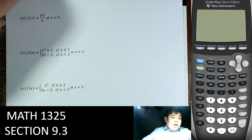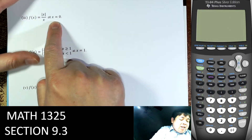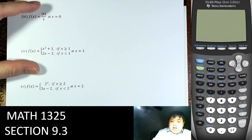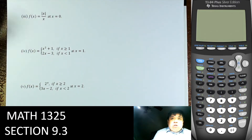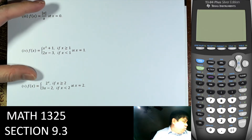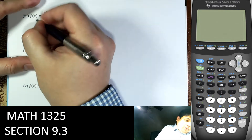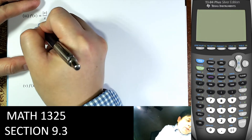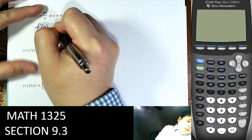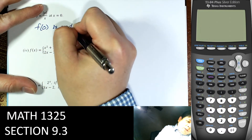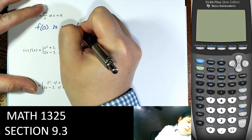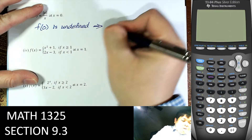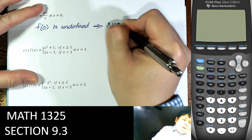Similarly, for the next function at x = 0, substituting gives undefined at x = 0. So we say it's not continuous, because if it's undefined it cannot be continuous.